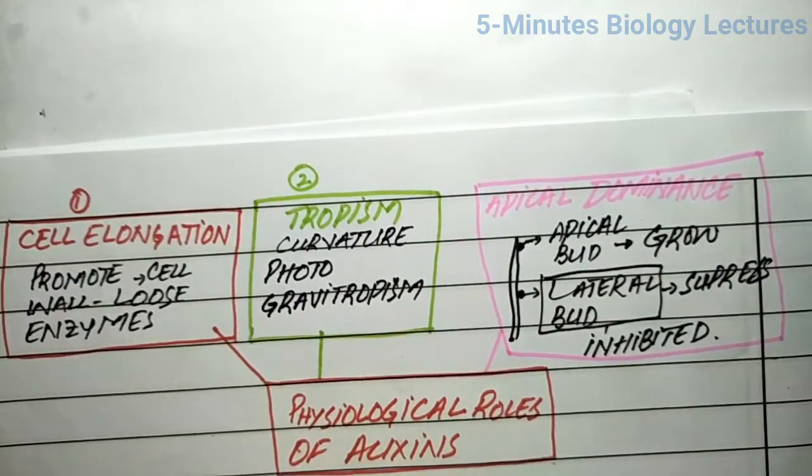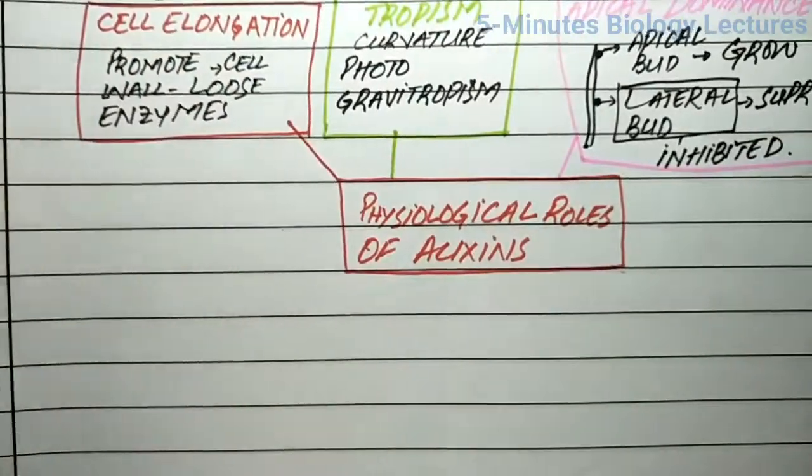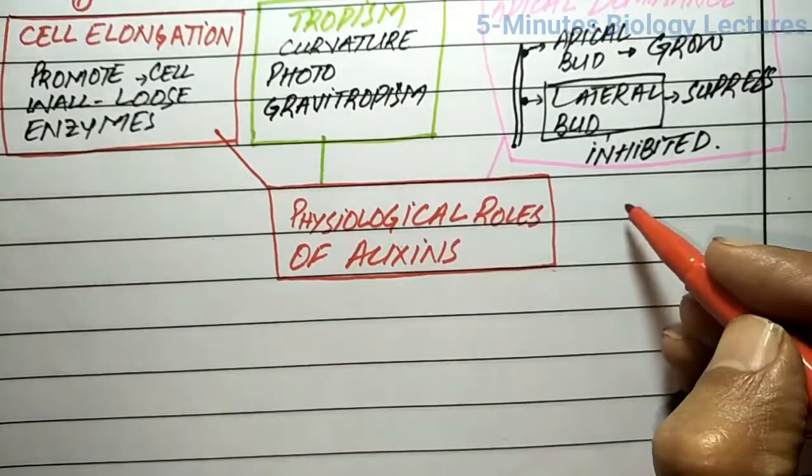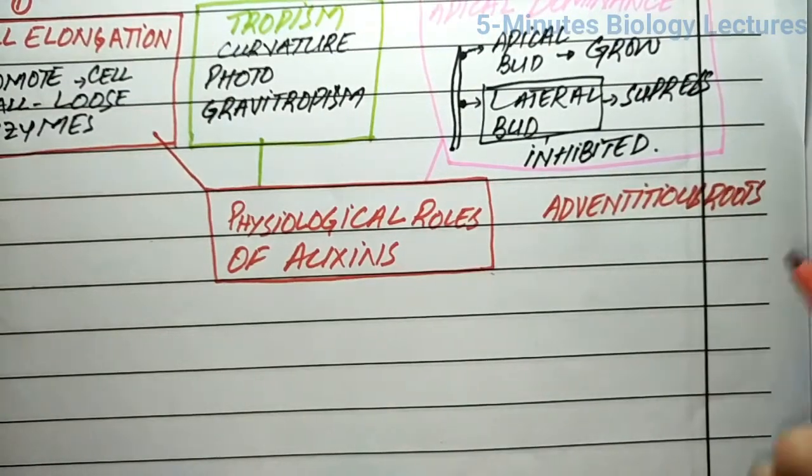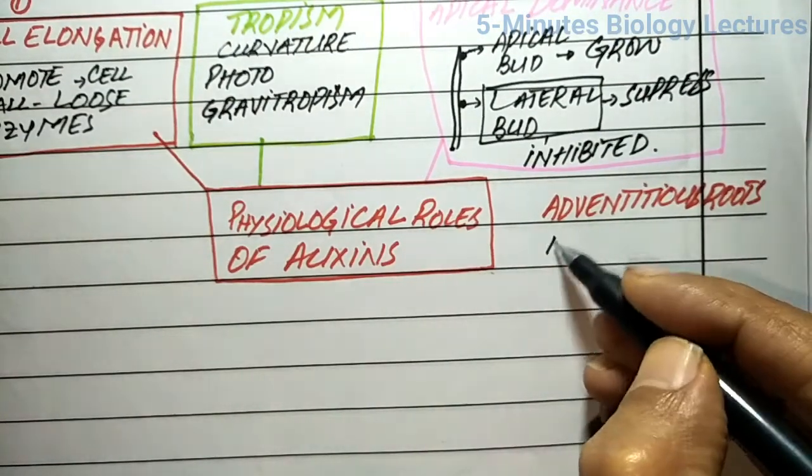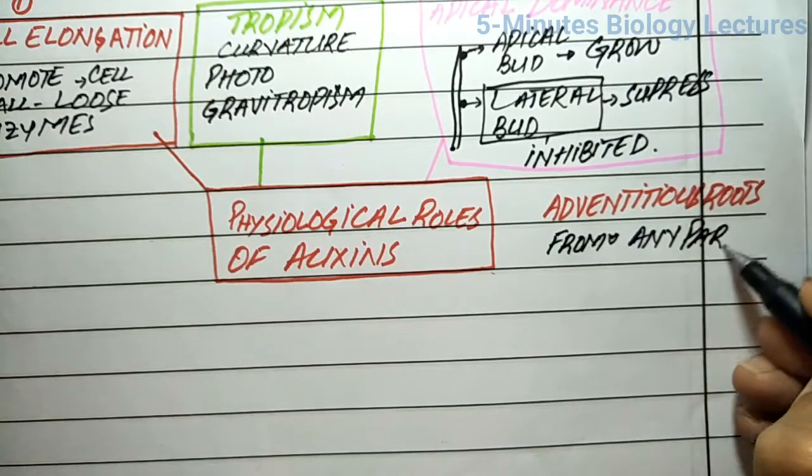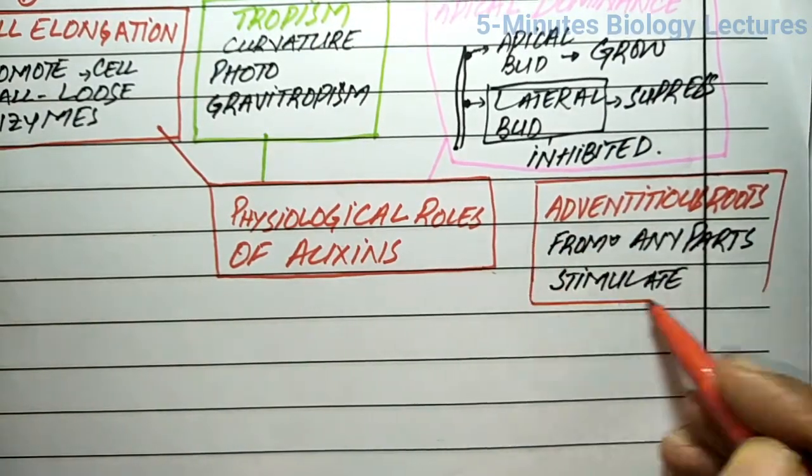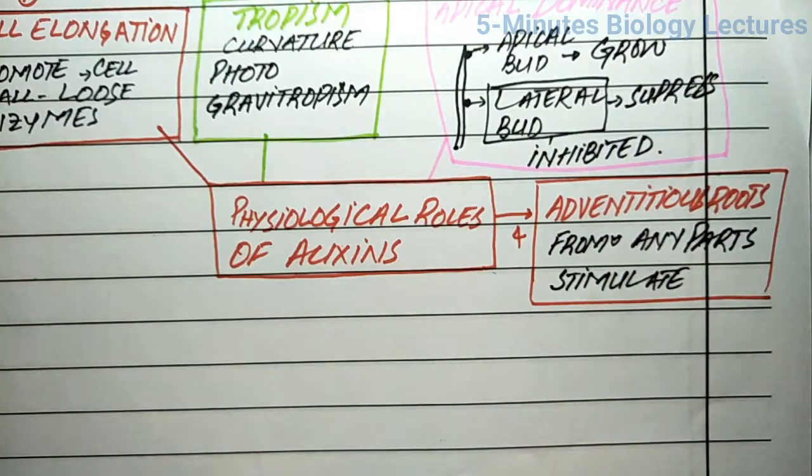Auxins are also responsible for the development of adventitious roots. Adventitious roots are roots that originate from any part except the radicle of the seed. Auxins have the power to develop roots from any part of the plant. That is why they are used in tissue culture as a rooting medium.